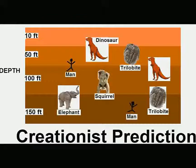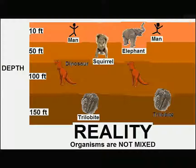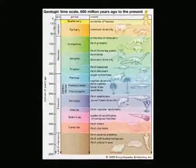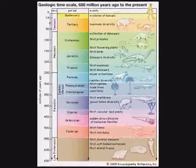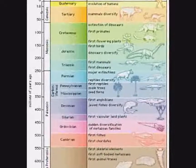The fossil record should display a complete temporal stratification and a very timely order in which things appear. If intelligent design or creationism is true, we wouldn't expect this at all — we would expect to find dinosaurs with humans alongside very primitive mollusks, all at the exact same time, with no stratification. When you actually look at the fossil record, it clearly matches the prediction that evolution would make. We never find human and dinosaur remains together, and we never find 60 million year old poodles. The fossil record unequivocally supports evolution.